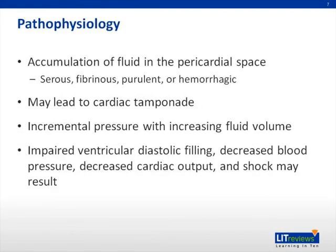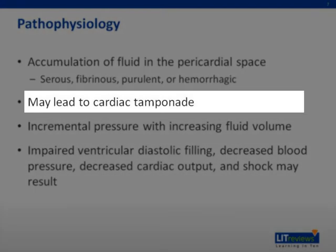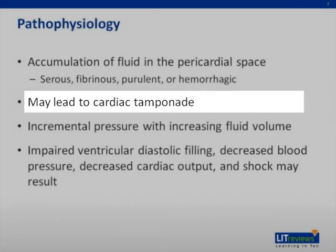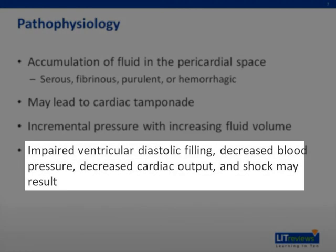Pericardial inflammation results in accumulation of fluid in the pericardial space. The nature of the fluid varies according to cause — it may be serous, fibrinous, purulent, or hemorrhagic. Cardiac tamponade occurs when the pericardial fluid reaches a level that compromises cardiac function, which may be in excess of one liter in adolescence. Once a critical volume is reached, pressure rises rapidly with small incremental changes, resulting in severe cardiac compression, impaired ventricular diastolic filling, decreased blood pressure, decreased cardiac output, and even shock.